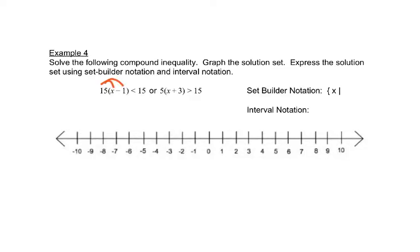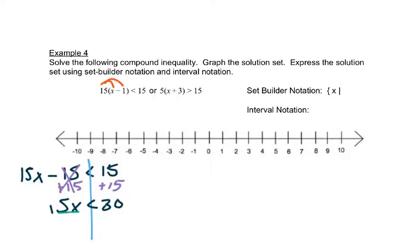We need to distribute this. So when we distribute 15 times x, we get 15x. And 15 times 1 is 15. So we have 15x minus 15 is less than 15. A lot of 15's there. So we'll add 15 to both sides. That leaves me 15x is less than 30. So we'll divide both sides by 15. It's a positive number so it does not change the inequality. And we get x is less than 2. So we can go ahead and write that part in our set builder notation.